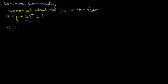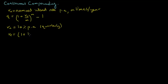So if the nominal interest rate equals 10% per annum compounded quarterly, then the effective annual interest rate equals 1 plus 10% divided by 4, all this to the power of 4, minus 1, which equals 10.38%.